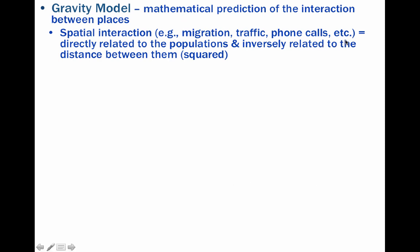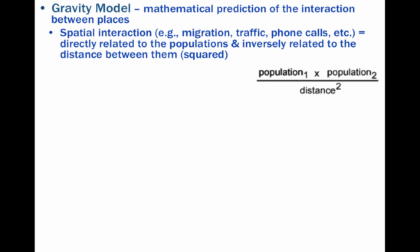Furthermore, the importance of a place according to the gravity model is almost exclusively based on population numbers. However, there are a plethora of other variables that attract people to locations, such as relative wealth, the cultural landscape, and so on.